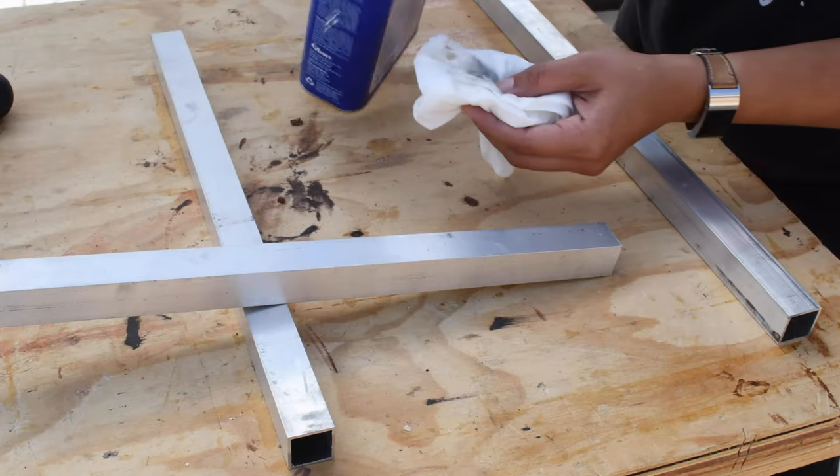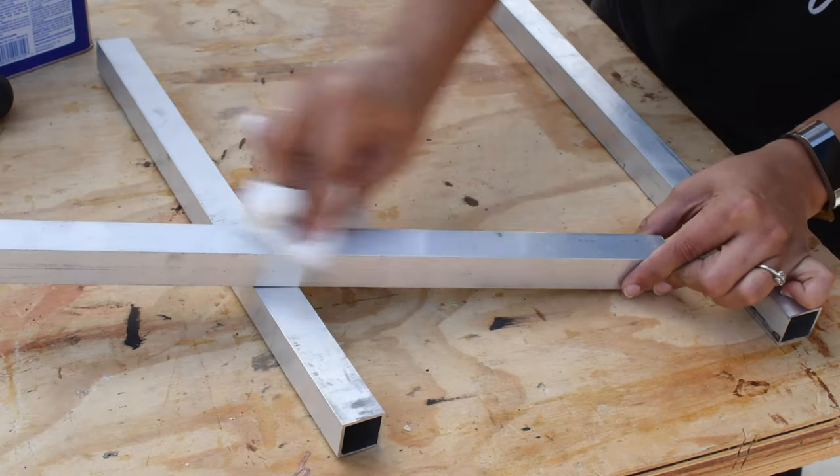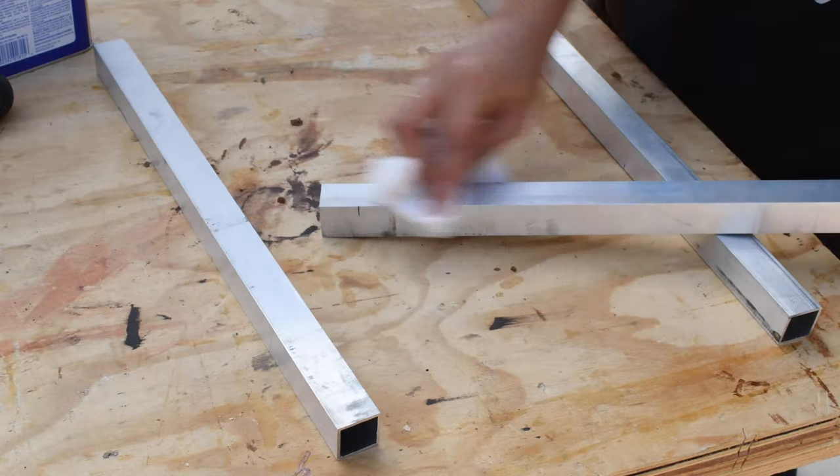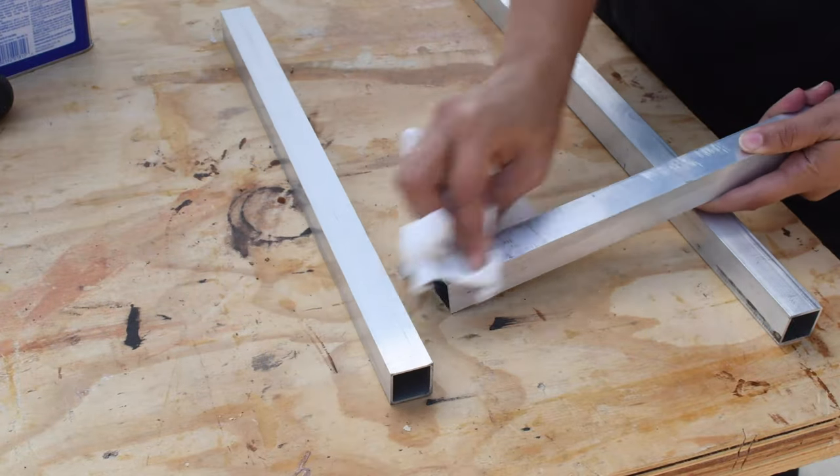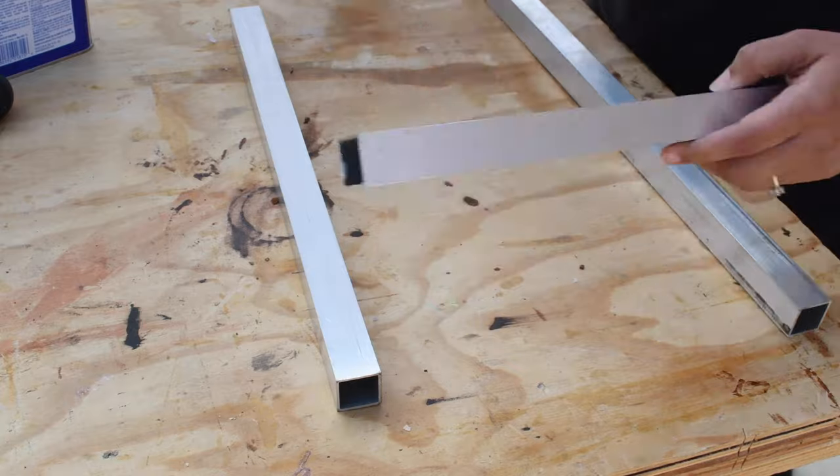Once I had all the cuts made, I cleaned up all the gunk and residue using acetone. Now you can find the cut list and a link to the blog post with printable plans for this bench in the description below.